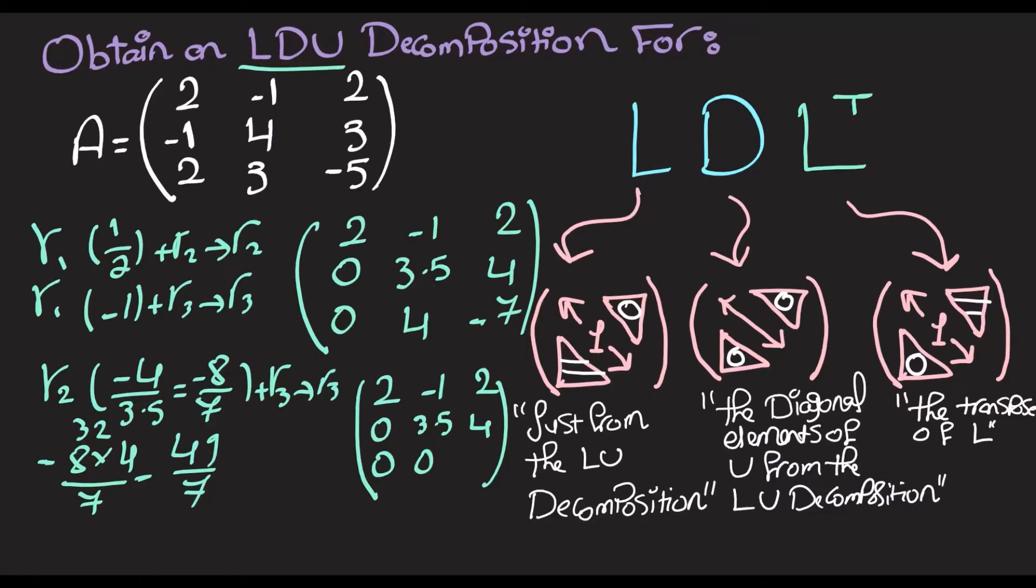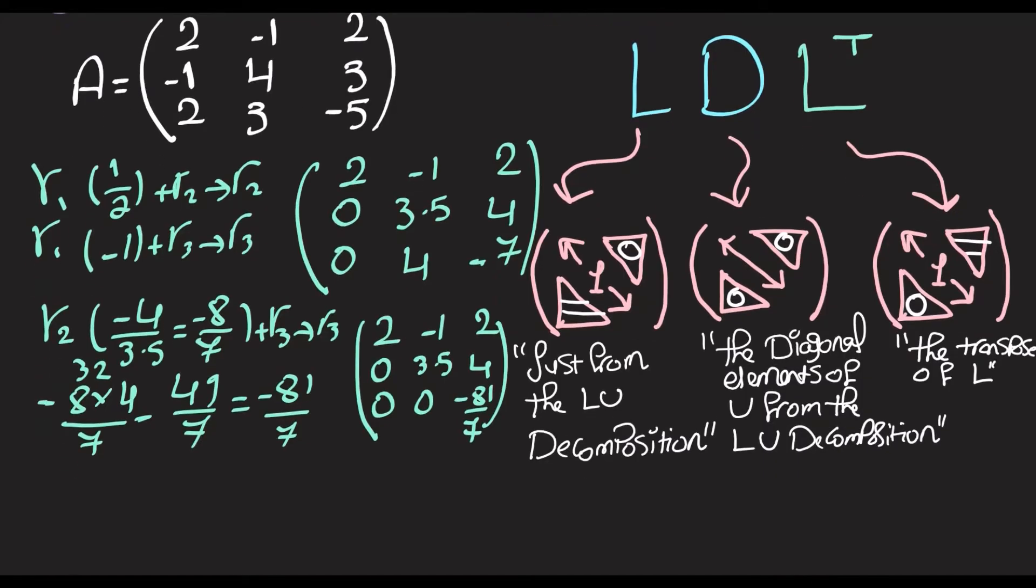And this means basically negative 81 over 7. So yeah, this is negative 81 over 7, and this is A in reduced echelon form. So we can just call this now U.